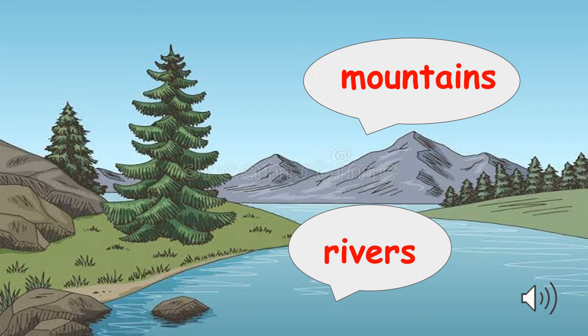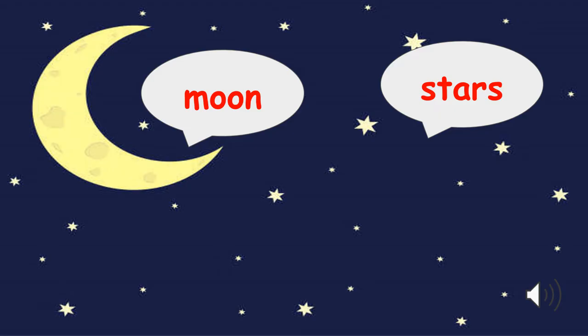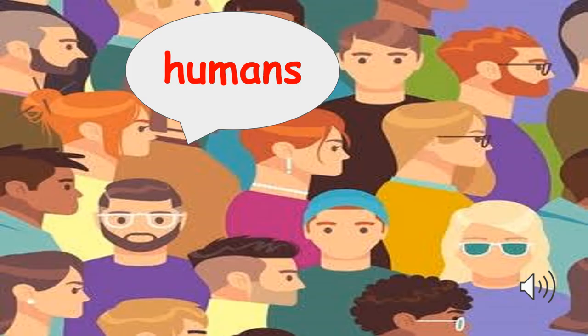Mountains, rivers, clouds, sky, sun, moon, stars. And yes, we humans are also natural things. So all those things which ma'am has told you are not made by any human — they are made in nature. So these all are natural things.